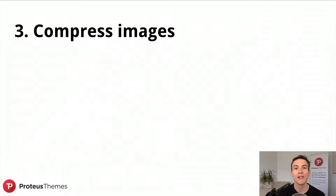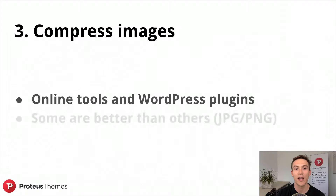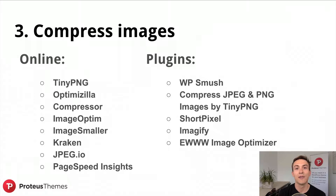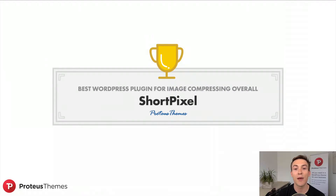The third step is that you should go further and compress your image. There are many online tools and WordPress plugins available for that, and some are better than others. The difference can also depend on whether you're compressing JPEG or PNG images. At Proteus Teams, we tested all the plugins and online tools that you can see here, and we came to a very interesting conclusion: the best online image optimization tool overall is Optimizilla, and among WordPress plugins, the best one for image compression overall is ShortPixel.